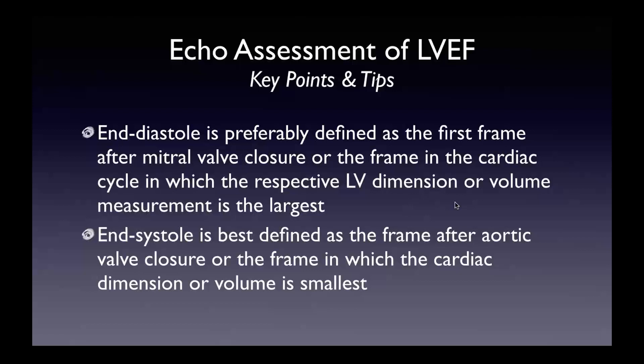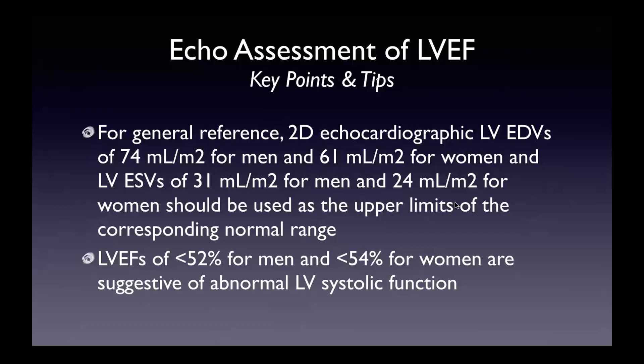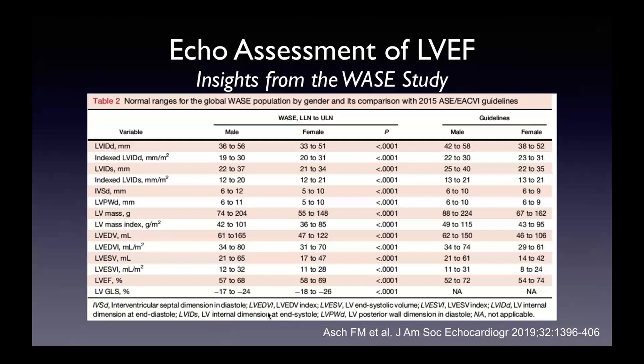Reference values for 2D volumes and ejection fraction based on Simpson's biplane: LV end-diastolic volumes of 74 mL/m² for men, 61 mL/m² for women; end-systolic 31 mL/m² for men, 24 for women — using two standard deviations above the normal average to determine abnormality. LV ejection fraction less than 52% for men, less than 54% for women suggests abnormal LV systolic function based on the ESE 2015 guidelines. These may change because of the WAYS study.